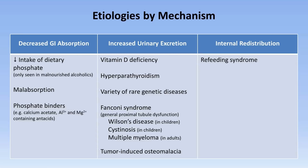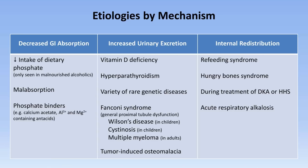Hungry bone syndrome, as mentioned in the video on hypocalcemia, is the consequence of rapid mineralization of bones following parathyroidectomy. During treatment of diabetic ketoacidosis or the hyperglycemic hyperosmolar syndrome, insulin treatment will increase intracellular phosphate utilization. Finally, in an acute respiratory alkalosis, high intracellular pH increases the activity of the enzyme phosphofructokinase, which catalyzes the most important regulatory step in glycolysis, one result of which is the generation of ATP from ADP, and thus phosphate depletion.